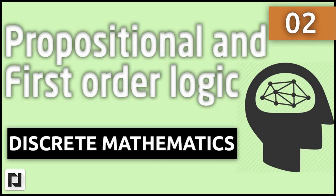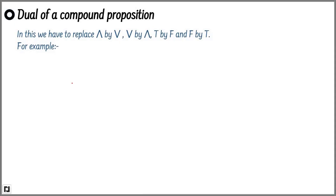So let's get started with today's lecture. For finding the dual of a compound proposition, we have to simply replace the symbol AND by OR, OR by AND, TRUE by FALSE, and FALSE by TRUE. For example, if we are given TRUE OR FALSE, the dual of this compound proposition is FALSE AND TRUE. It is simple.